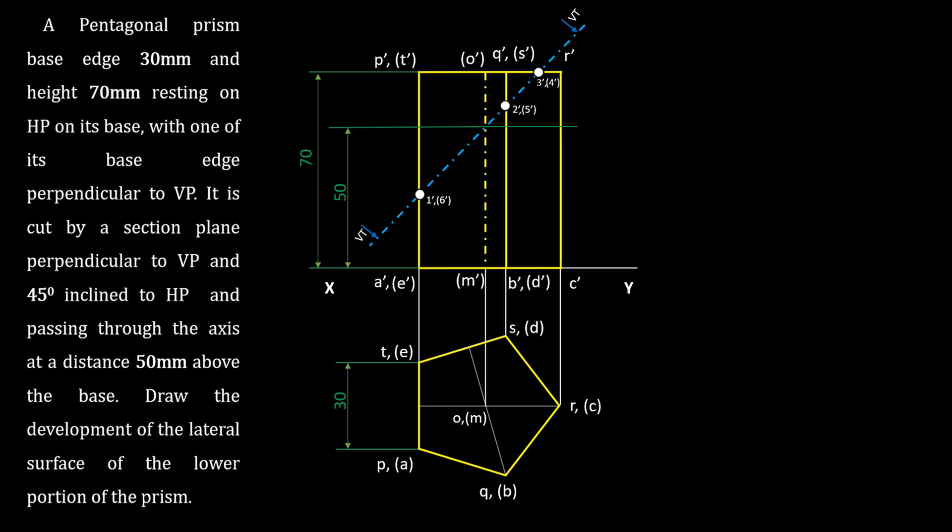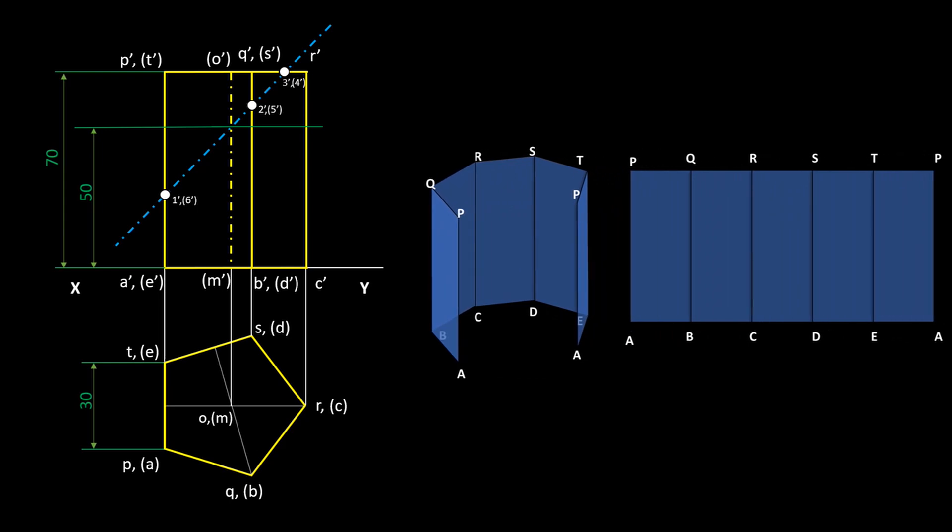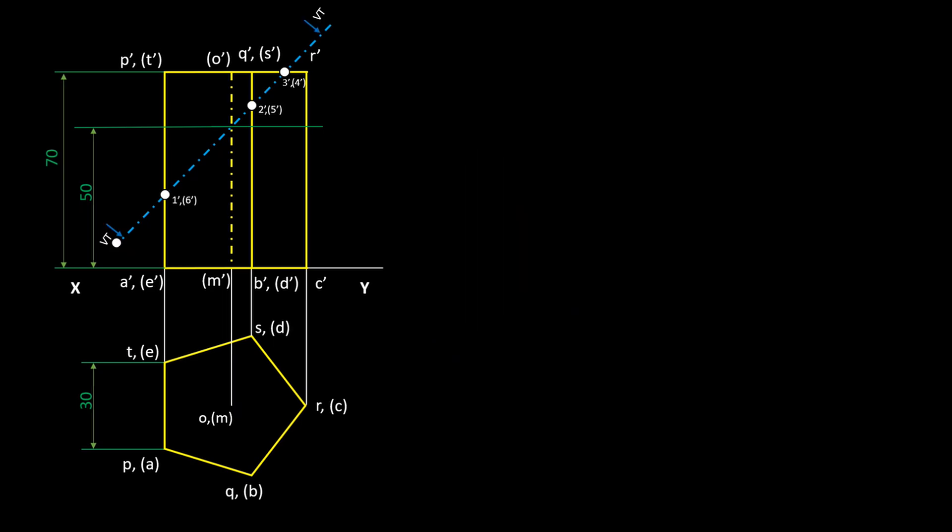Now let's go for developing the lateral surfaces of the prism. We can start developing from any lateral edge. Here we starting from the vertical edge AP. So the starting and finishing edge of the pattern will be AP only. Here development starts from the vertical edge AB with the true length 70mm.